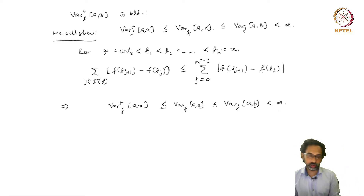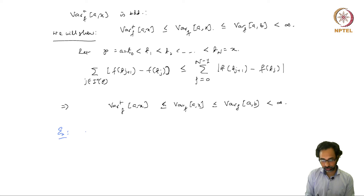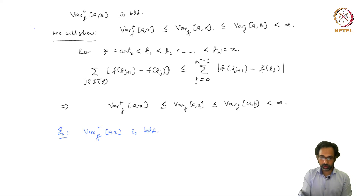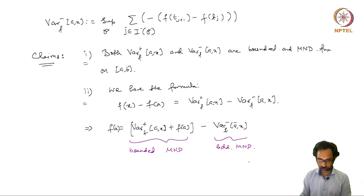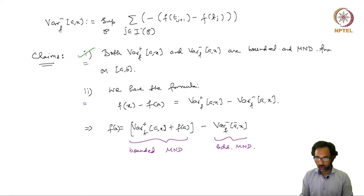And it is immediate that this is less than or equal to the total variation over [a, b], which is finite. So the positive variation is also bounded. We have shown that the positive variation is both bounded and monotonically non-decreasing, and as an exercise you should show that var⁻ is also bounded. This proves the first part of the claim — that both var⁺ and var⁻ are bounded and monotonically non-decreasing.